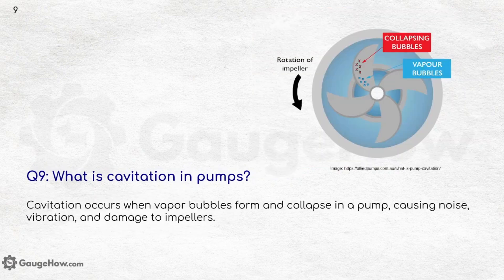What is cavitation in pumps? Cavitation occurs when vapour bubbles form and collapse in a pump, causing noise, vibration, and damage to the impellers.